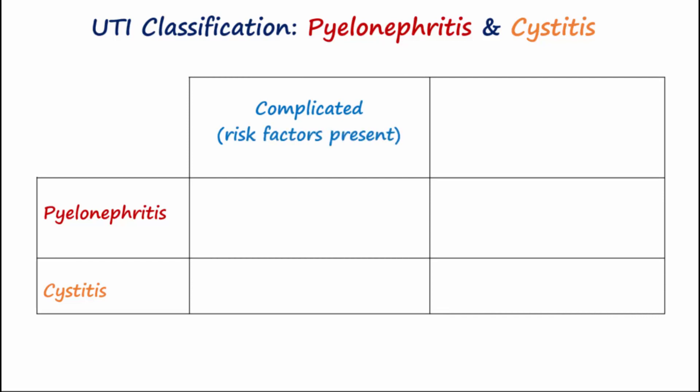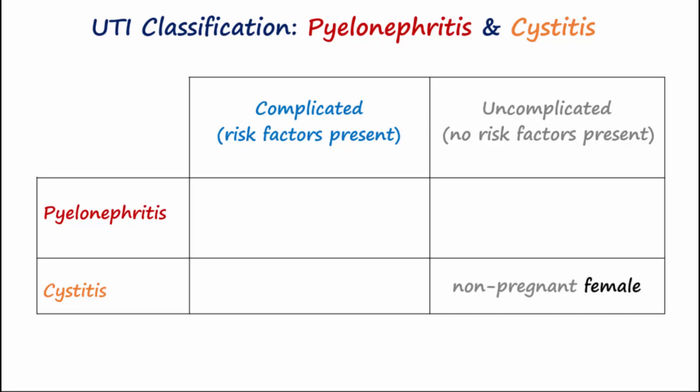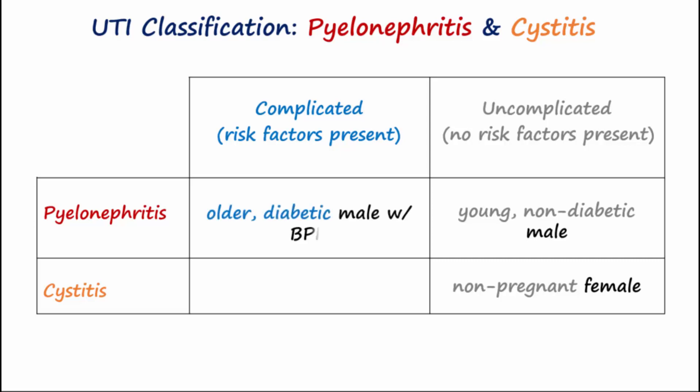UTIs may be further classified as complicated and uncomplicated. Examples of uncomplicated UTIs might include a lower UTI that occurs in a non-pregnant healthy premenopausal female, or an upper UTI like pyelonephritis affecting the kidney in a young non-diabetic male. In contrast, complicated UTIs occur in the presence of certain risk factors like diabetes, BPH, pregnancy, or menopause.